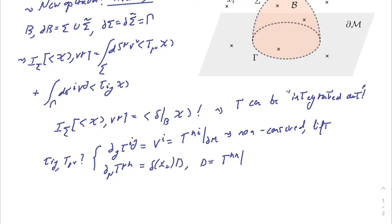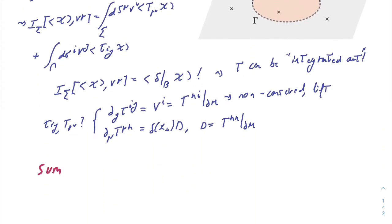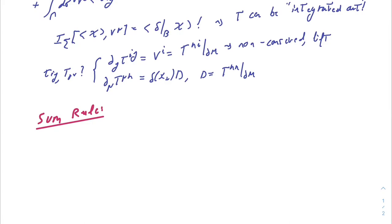Meanwhile, T is still conserved away from the boundary, and the non-conservation is related to the displacement operator. The strategy to derive the sum rule is now to consider this topological operator applied to the two-point function DD with a dilatation.